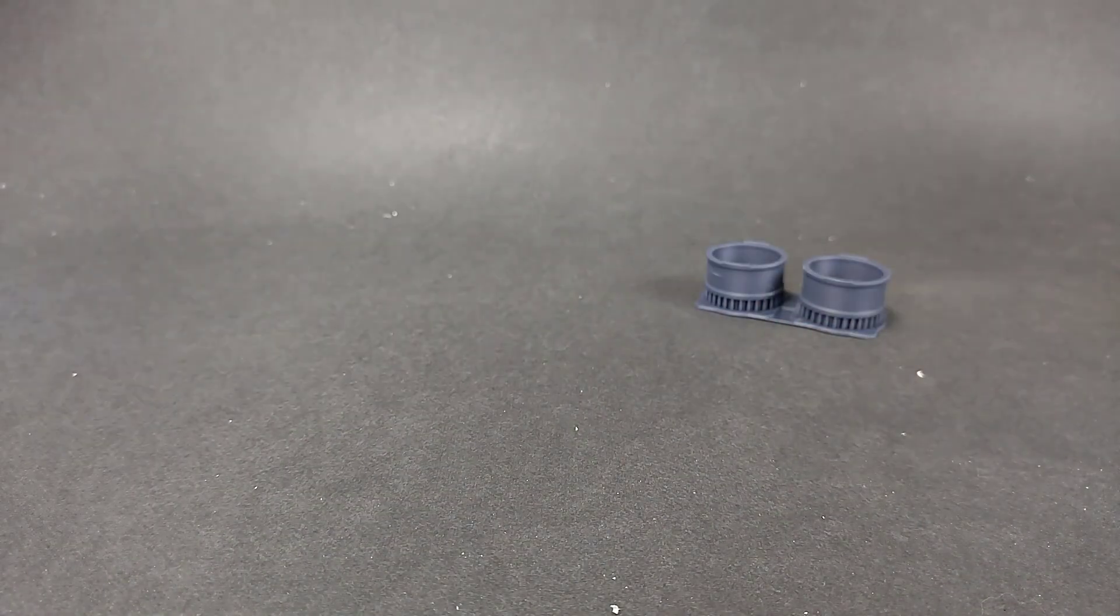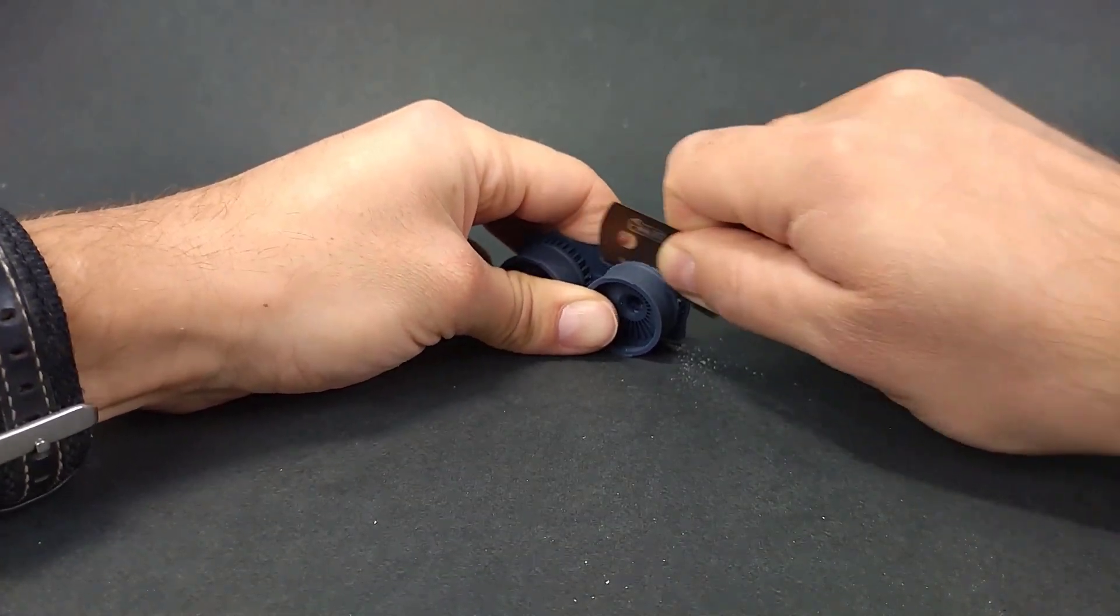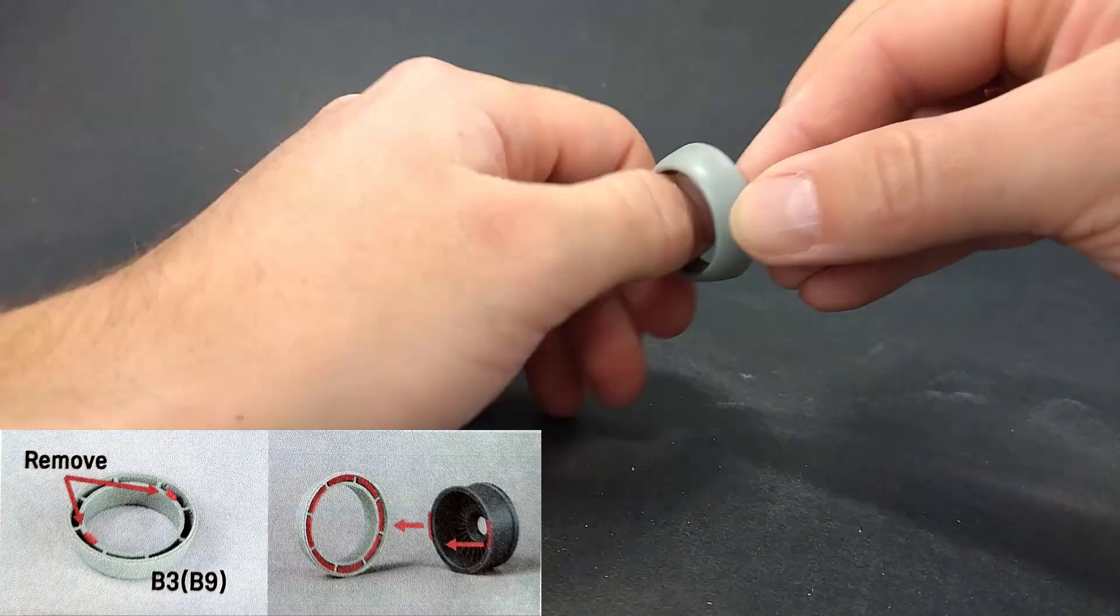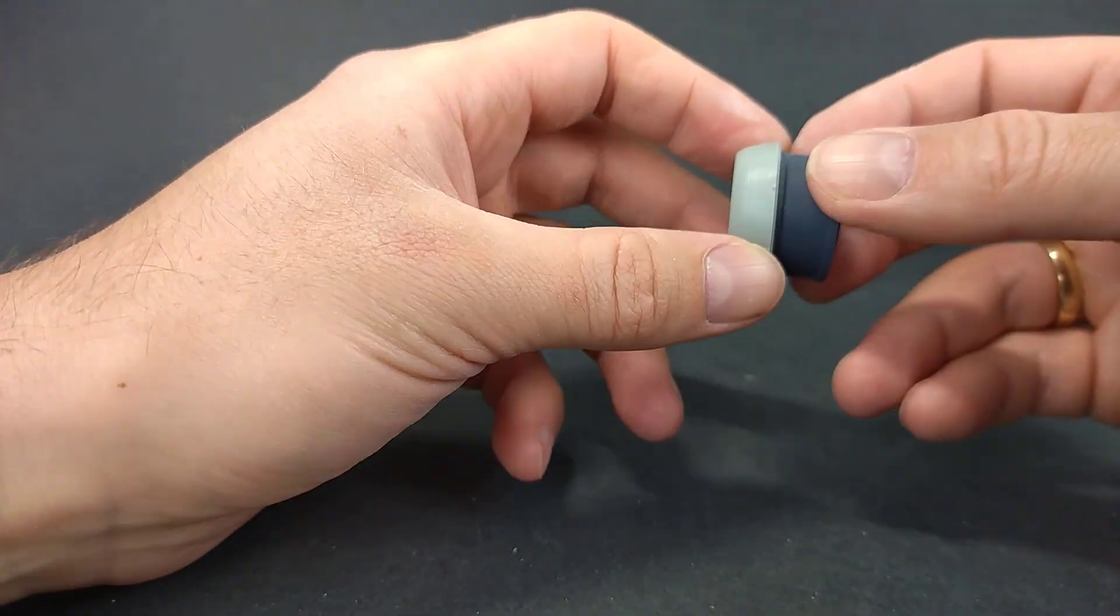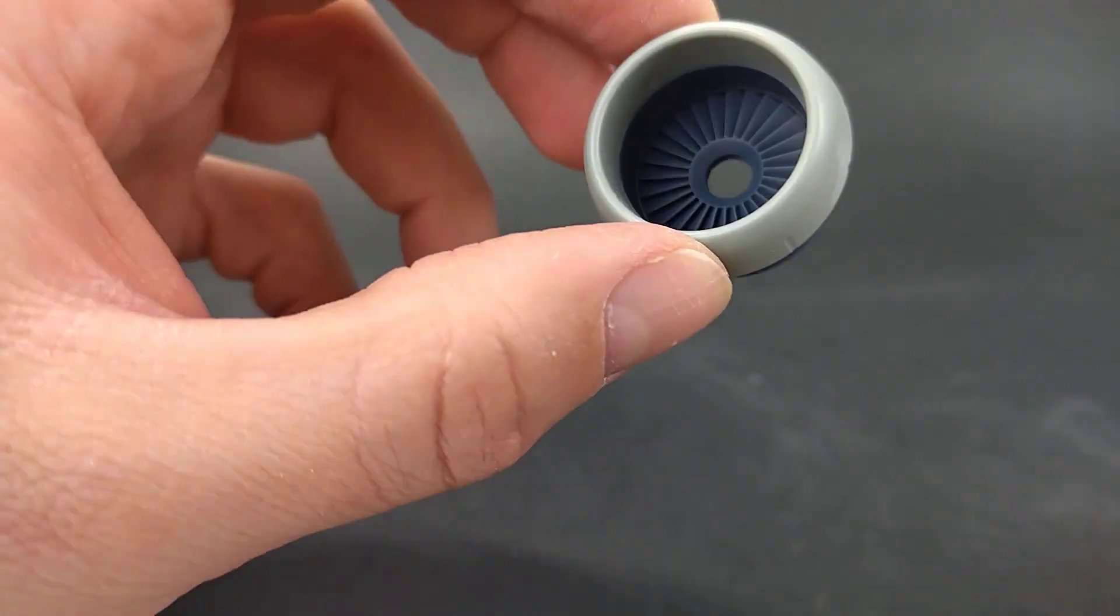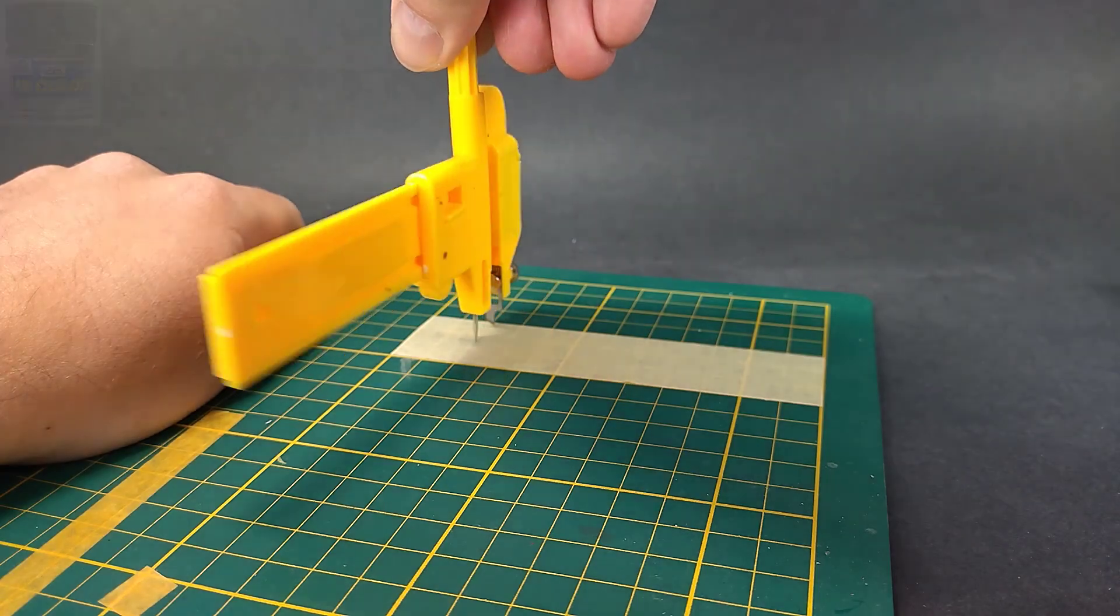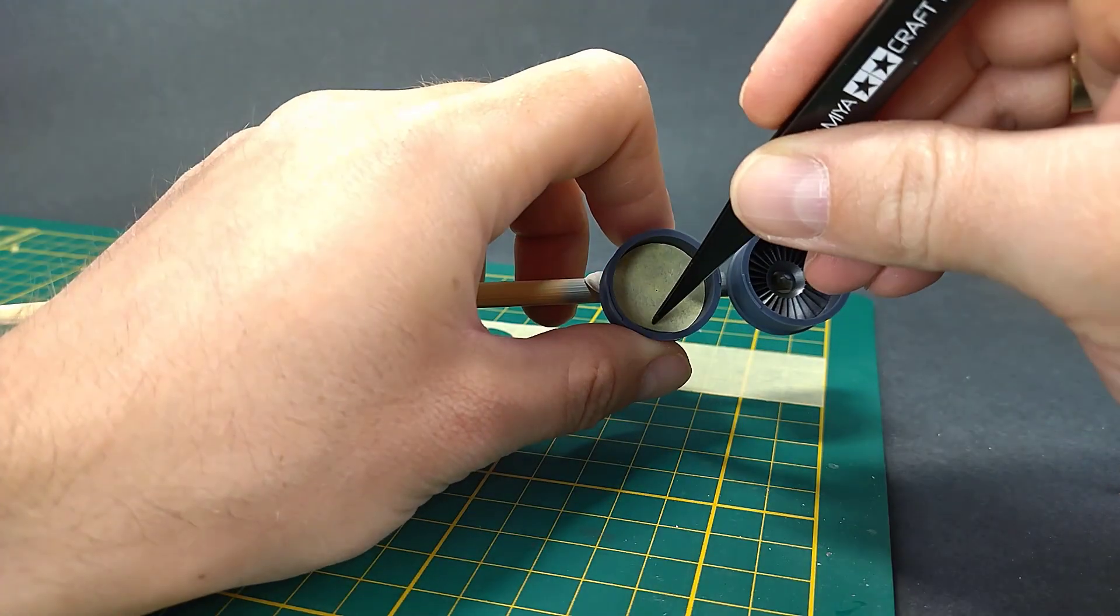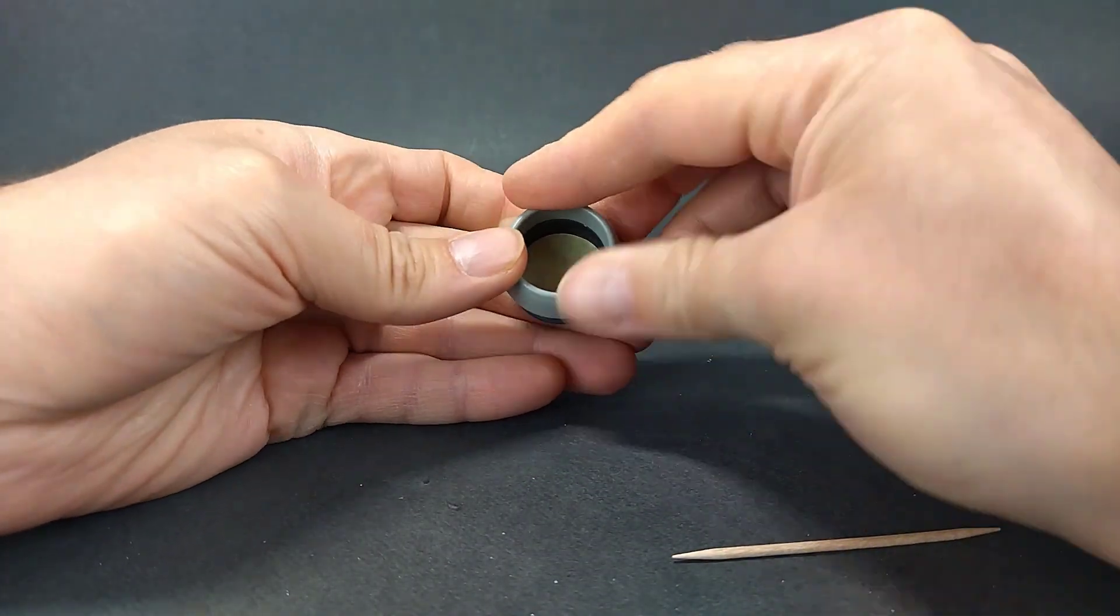Resin parts have to be cut out from their protection and bases, and before I put them in place there are some plastic parts modifications to be done. To connect resin and plastic I use CA glue.